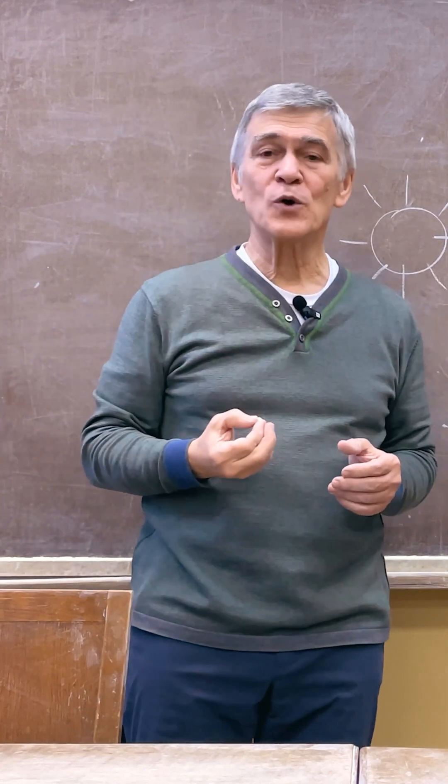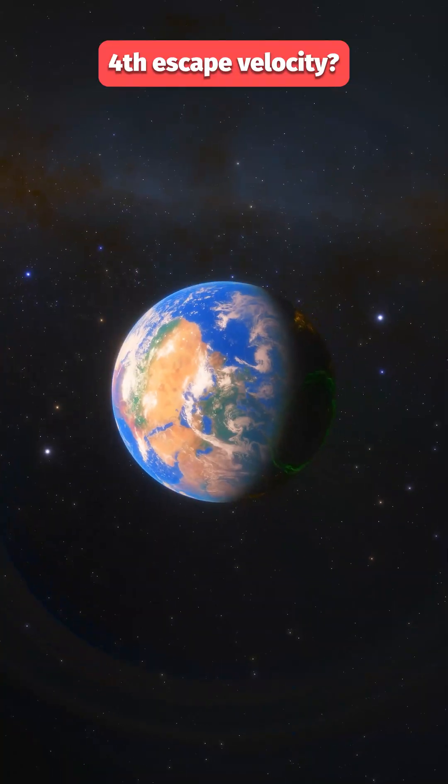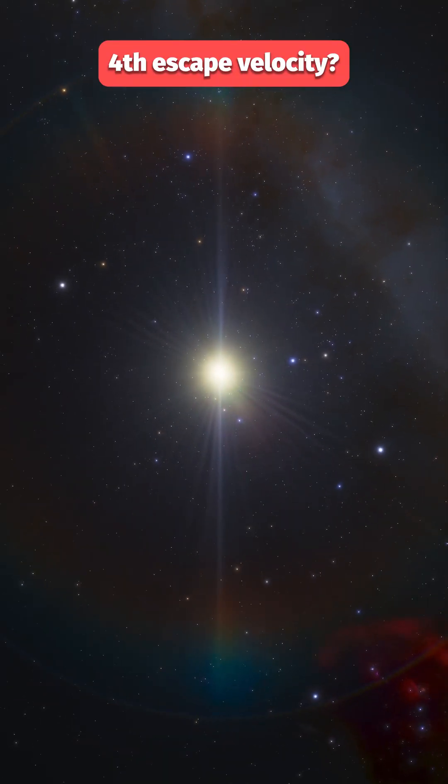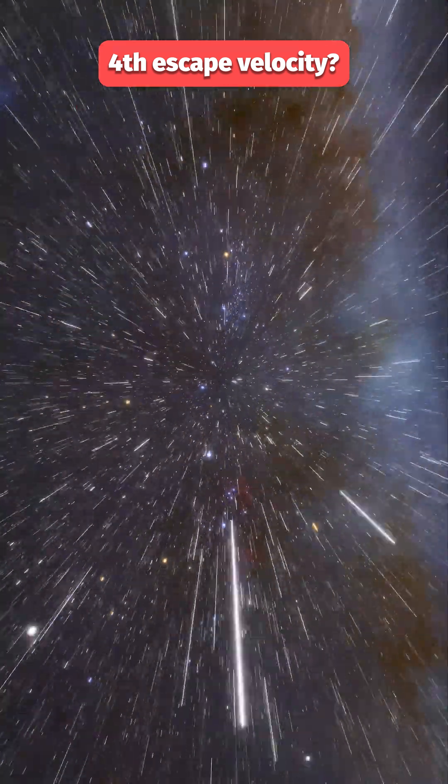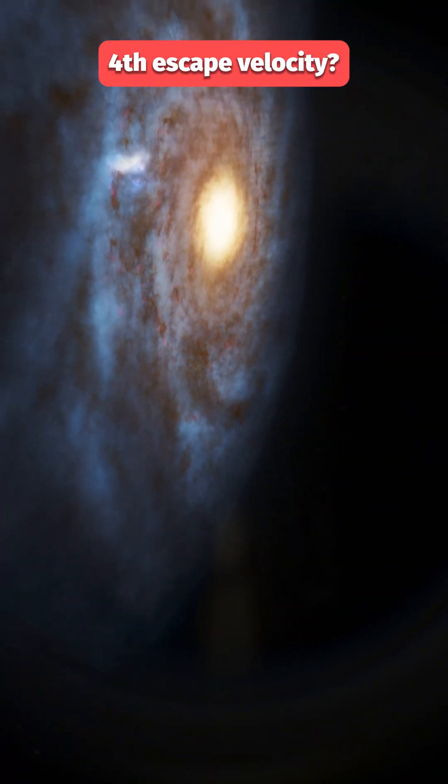Well, what about the fourth one? And the thing is, no one has defined the fourth cosmic speed precisely yet. Some say it's the speed at which you can get from Earth to the Sun, while others say it's the speed at which you can fly beyond our star system galaxy. We need a speed of over 600 km per second.